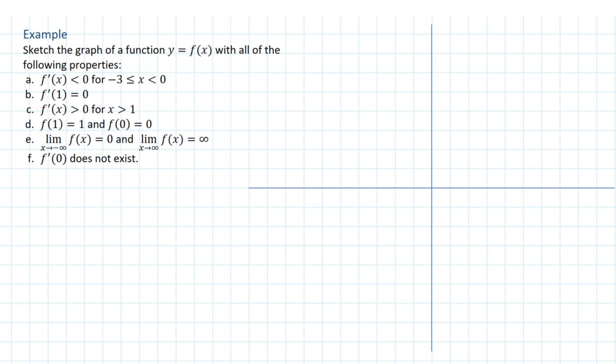Now, I'm going to use a red color to make some indications of some things that we know. So the first thing we know is that the derivative is negative between -3 and 0. So actually, the first thing I'm going to do is I'm going to put some marks on my axes. There's 1, 2, 3, and that's probably enough.